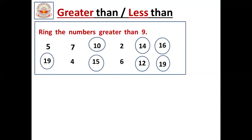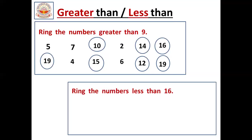Now we will do the next problem. Here, ring the numbers less than 16. Small numbers compared to 16 — small numbers we should circle here. Before that, we should see the numbers. What are the numbers given? We should see first.